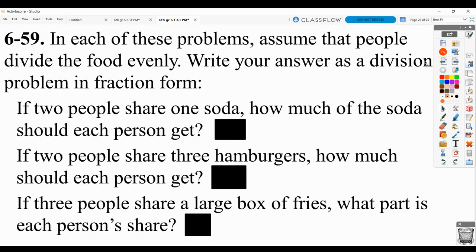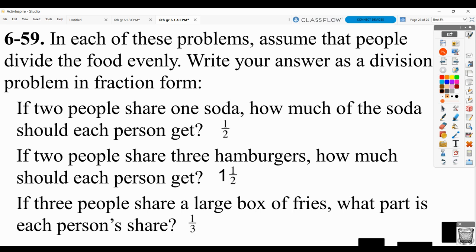In each problem, you have to assume that people divide the food evenly. Write your answer as a division problem in fraction form. So if two people share one soda, how much are they each getting? 1 soda divided by 2 means they're each getting half. If two people share three hamburgers, how much are they getting? Three hamburgers divided by 2 would be 3 halves or 1 1⁄2 hamburgers. Three people share a large box of fries. Then you're each getting 1 third of the box of fries.